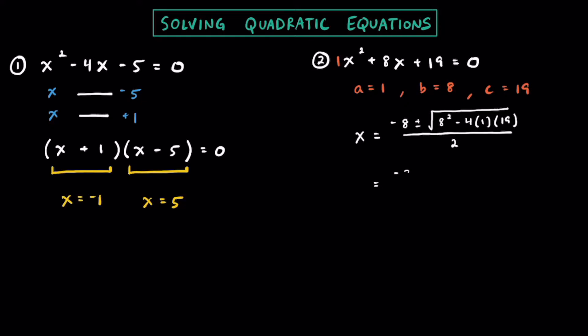Simplifying this a bit, we have negative 8 plus or minus the square root of 8 times 8 is 64, minus 4 times 1 which is 4, times 19 is 76. So we have 64 minus 76, and that's going to be all over 2. Simplifying the radical, 64 minus 76 is negative 12, so the square root of negative 12. Since this value — called the discriminant — is negative, we know we're going to have no real solutions. This whole thing is over 2.